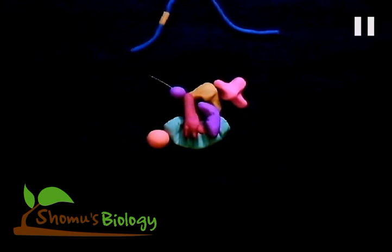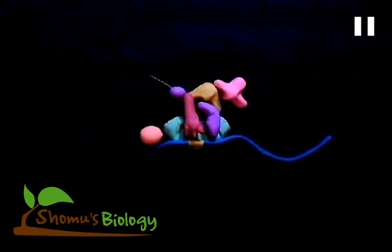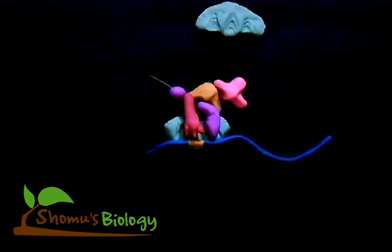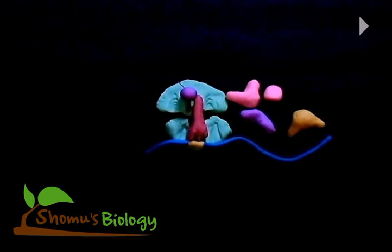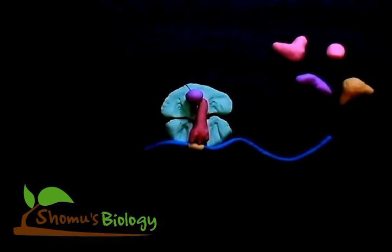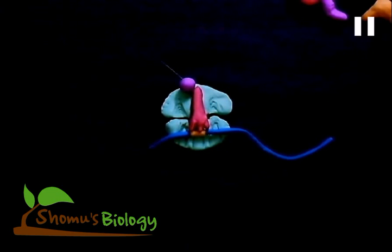The formylated methionine-containing tRNA binds, and then the mRNA comes and sits in position. After mRNA attachment, initiation factor 3 is released and the GTP gets hydrolyzed. Upon release of initiation factor 3, the 50S subunit can bind. Upon 50S binding, GTP is hydrolyzed and initiation factors 1 and 2 are released, giving us a complete ribosome holding the mRNA and FMET-tRNA.